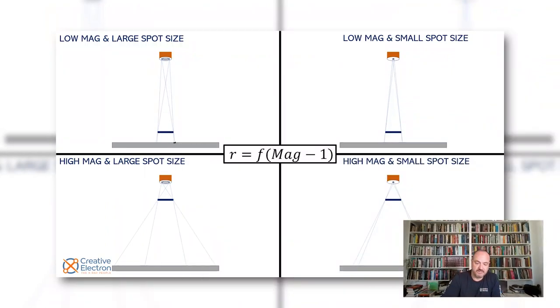Part one we talked about what happens when you have an ideal detector, and by ideal detector we meant a detector where the pixels are really really small, zero size pixels. So we end up with infinite number of pixels on an x-ray detector and we determine that the resolution in that case is equal to F which is the focal spot size on the x-ray source times magnification minus one.